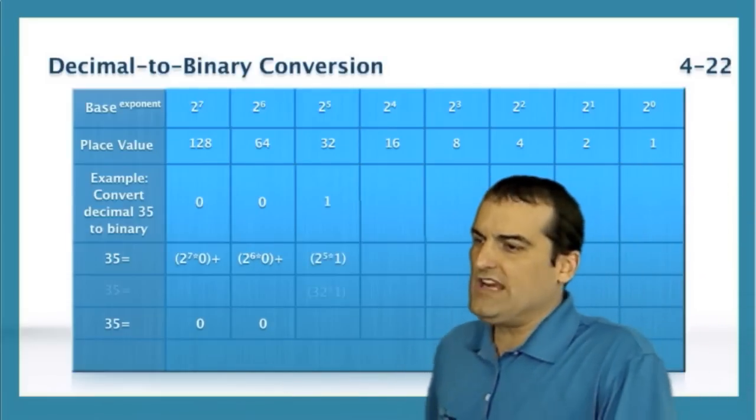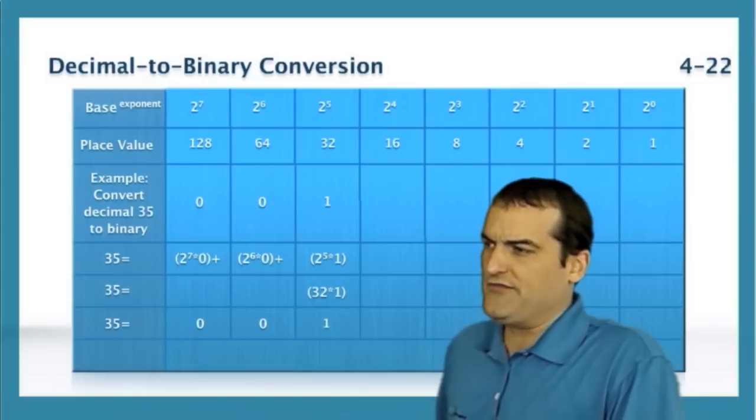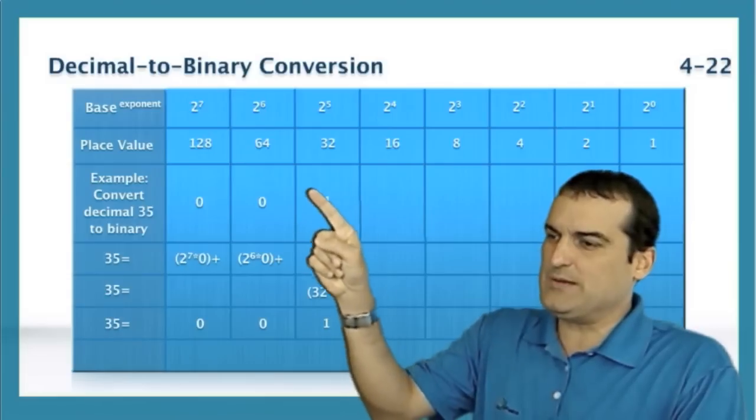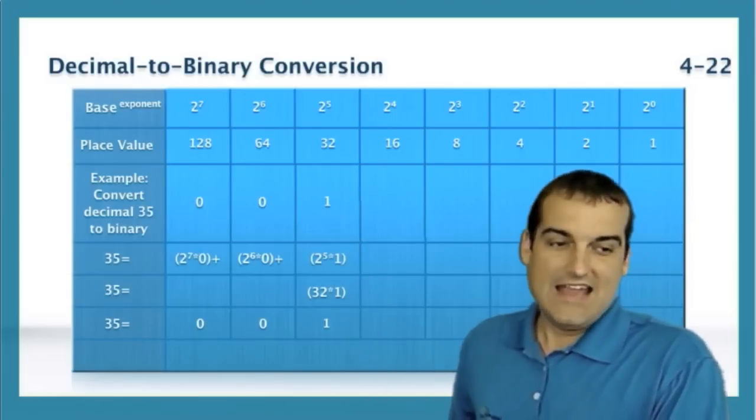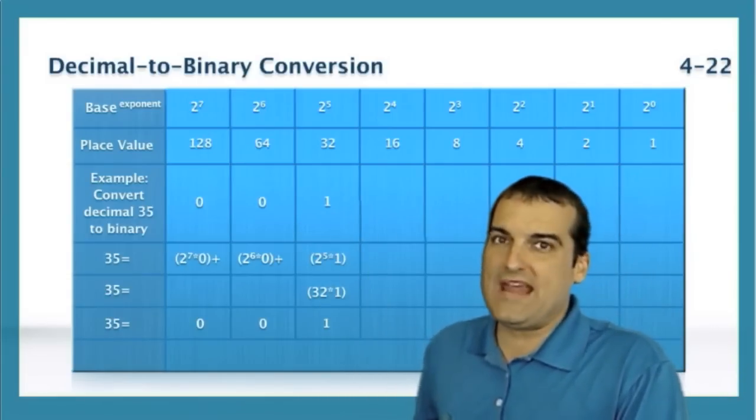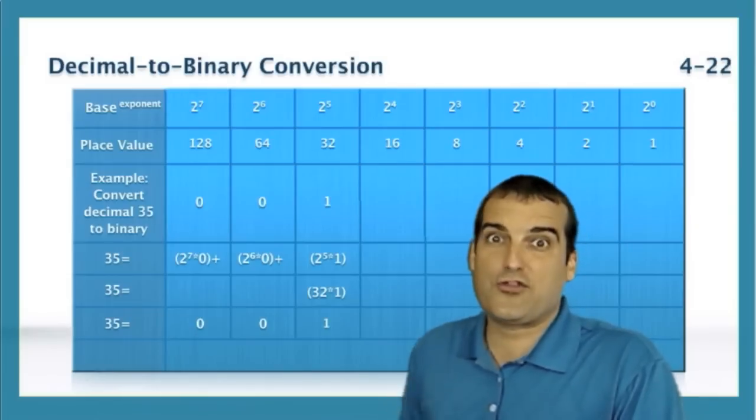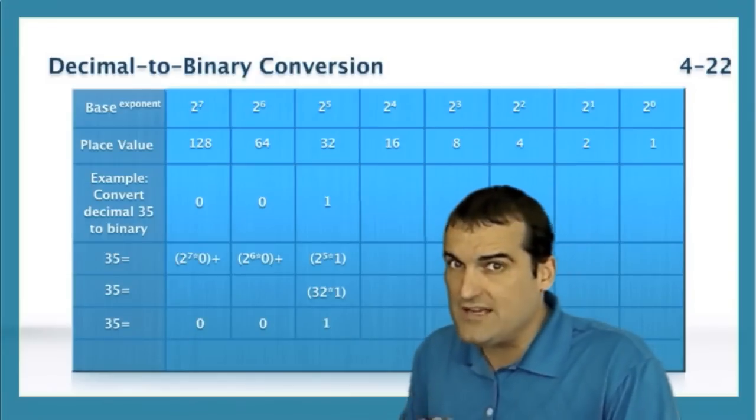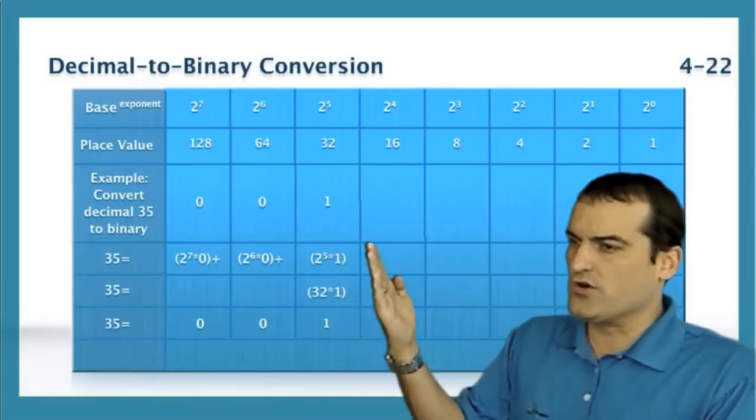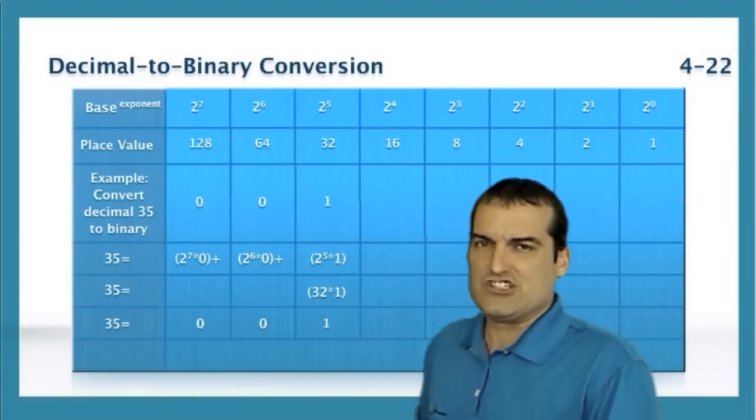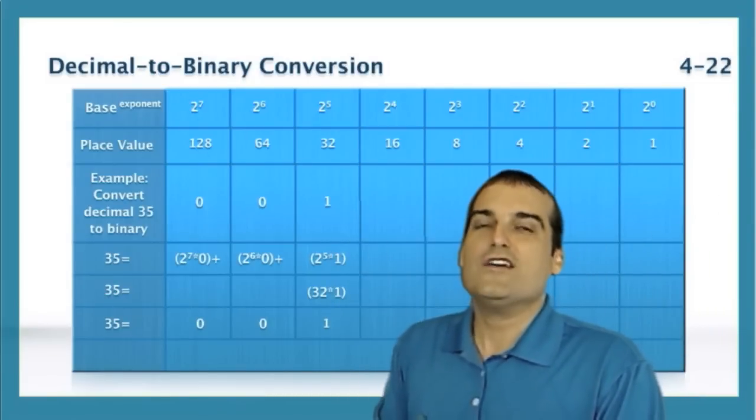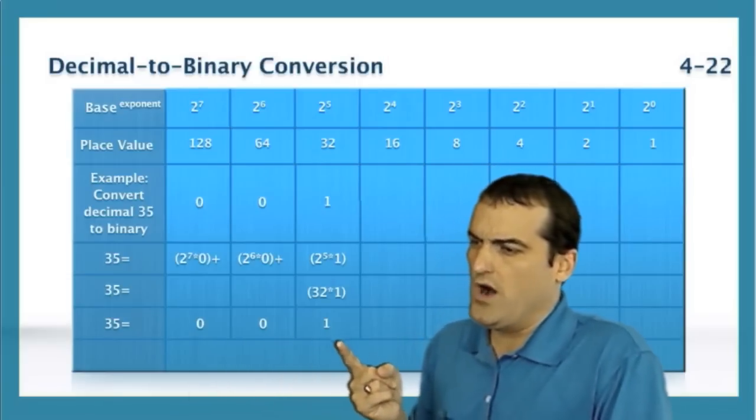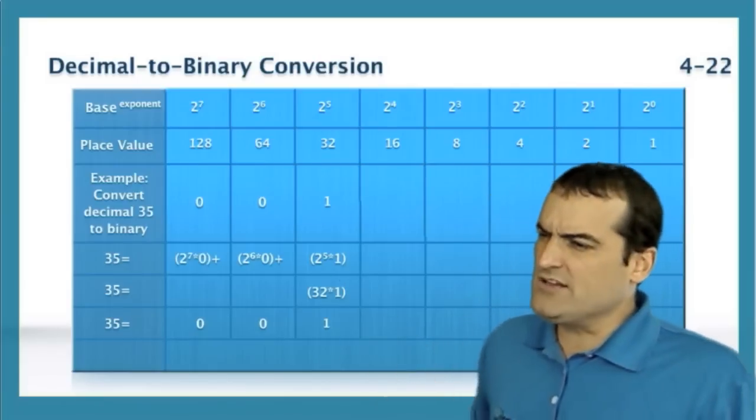Can we take 32 from 35? The answer, yes, we can. So we have a 1 in that bit position. And we know we have a remainder of 3. We have subtracted 32 from 35. This gives us a remainder of 3 that we're going to try and work out with our remaining bit positions. Right now, the octet in binary looks like this, 0, 0, 1.